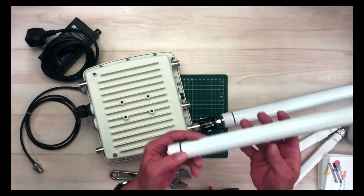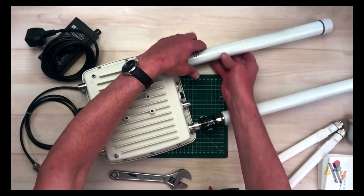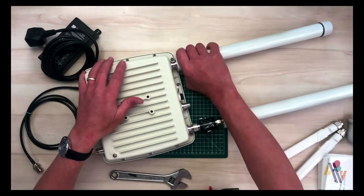Now we take our second antenna and normally you'd also add a lightning arrester to this too. And a final tighten.